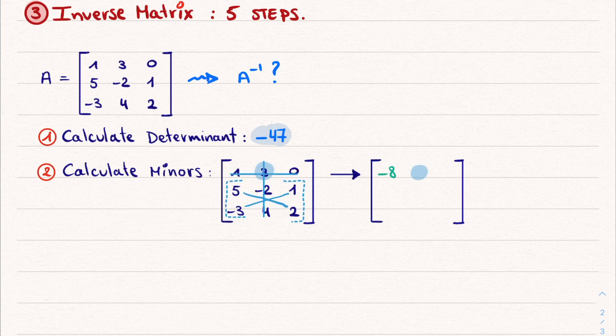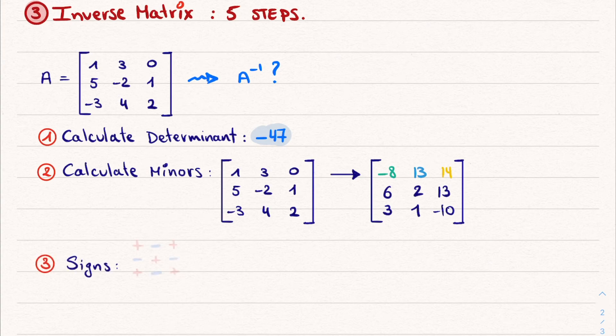And now you see why being able to calculate 2 by 2 determinants is so valuable, since the same procedure needs to be done for all 9 elements, each time calculating a 2 by 2 determinant. Step 3 is taking care of the signs by mapping a checker pattern of plus and minus signs over the matrix, and adjusting where necessary. When an element overlaps with a minus sign, we need to flip the sign around.